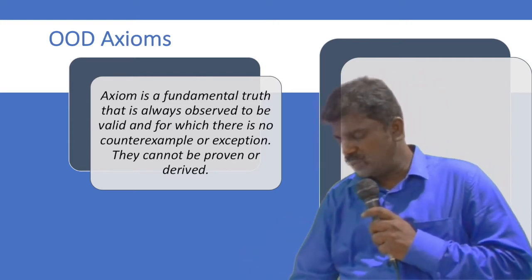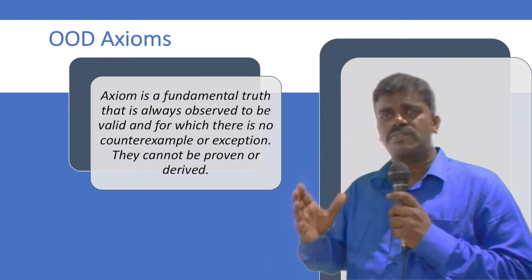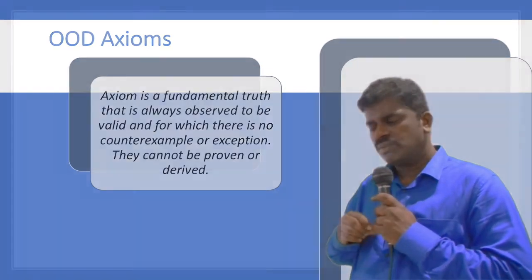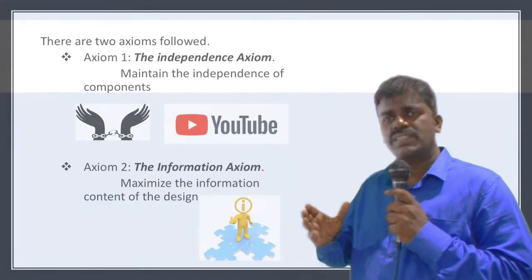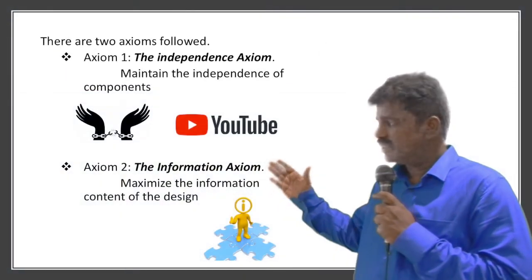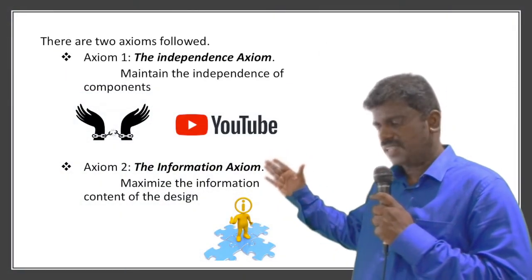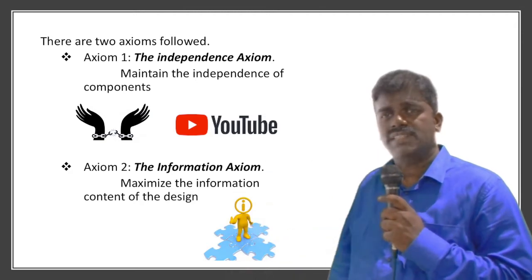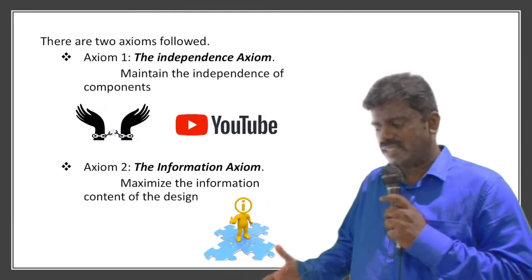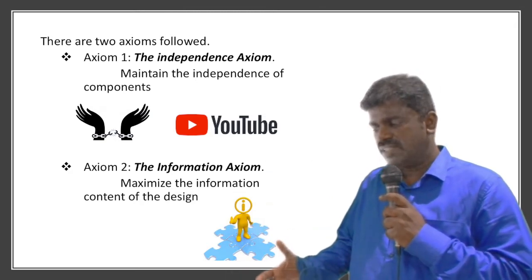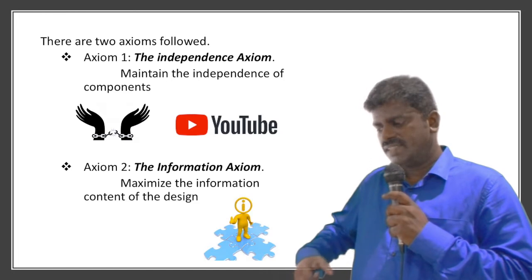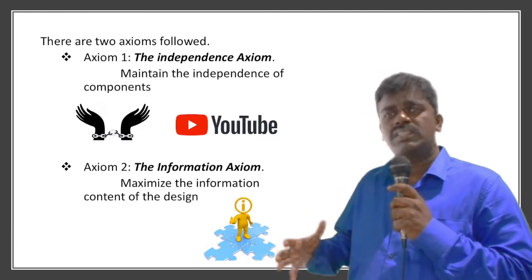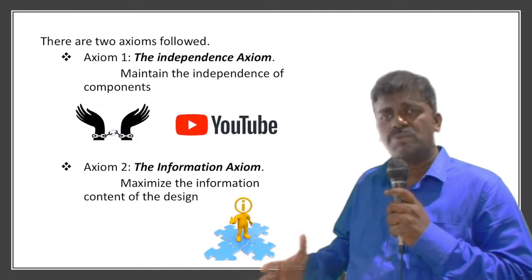There are two types of axioms. The first one is the independence axiom. The second is the information axiom. The independence axiom means it is like maintaining the independence of software components.